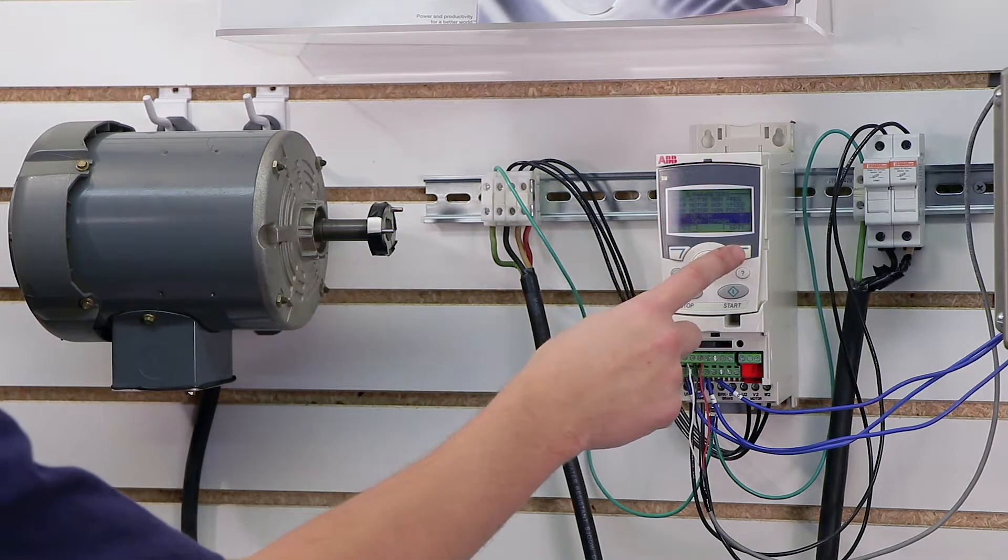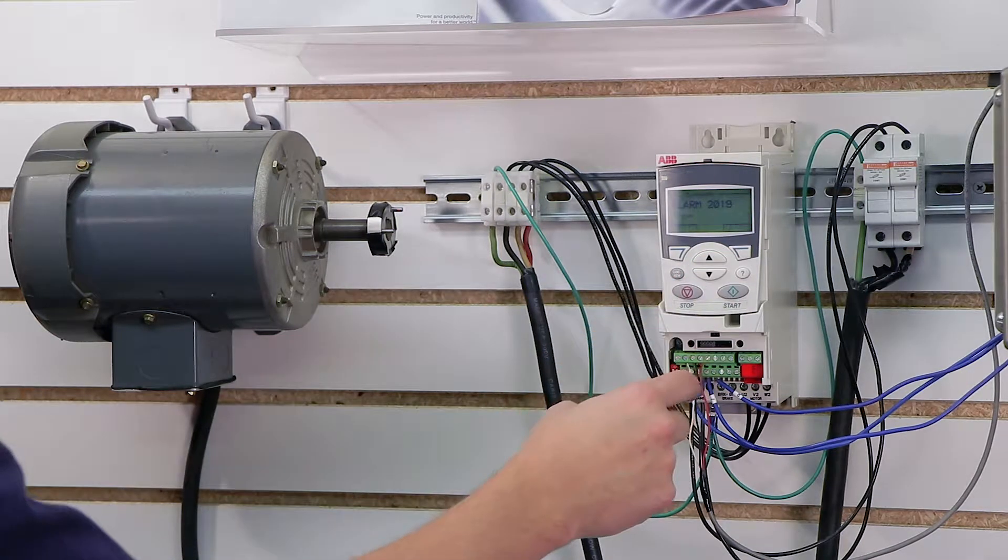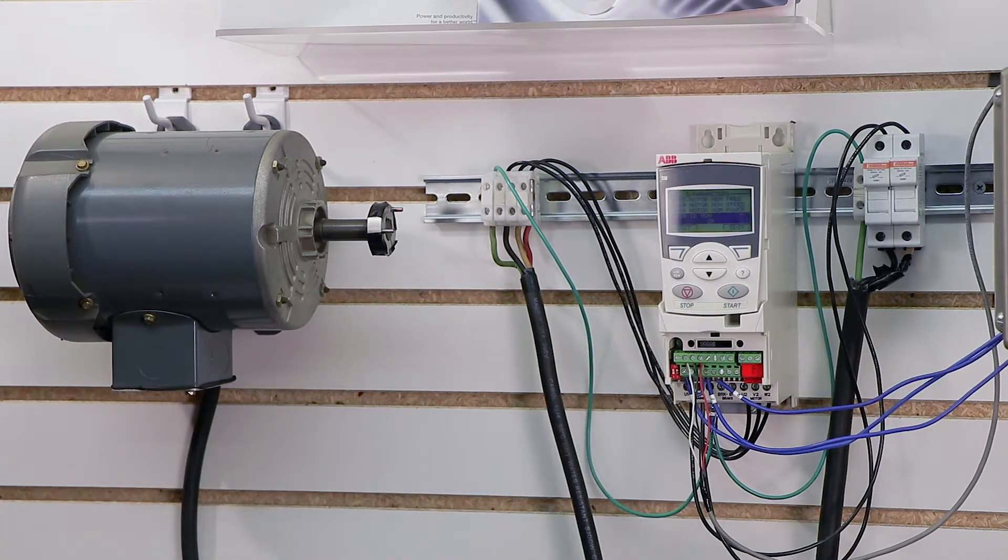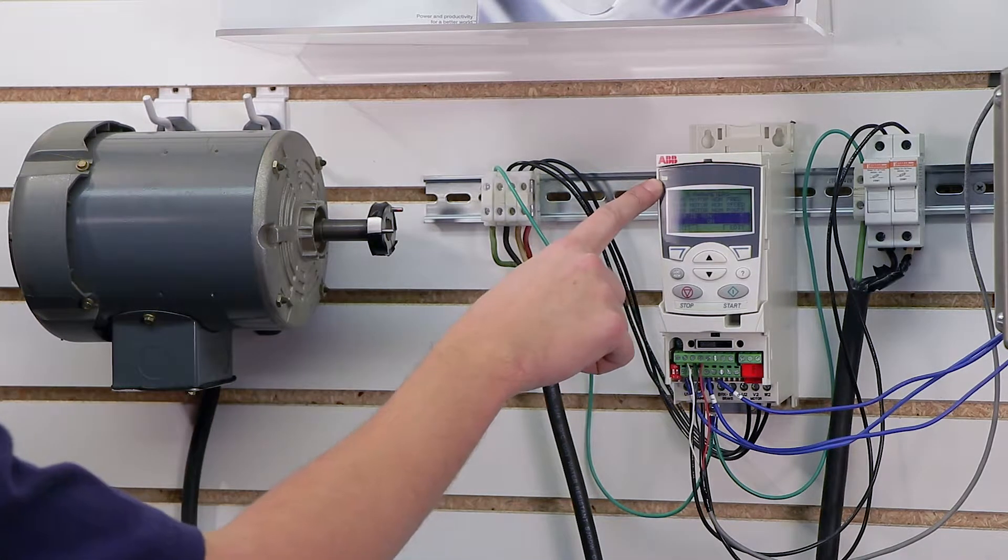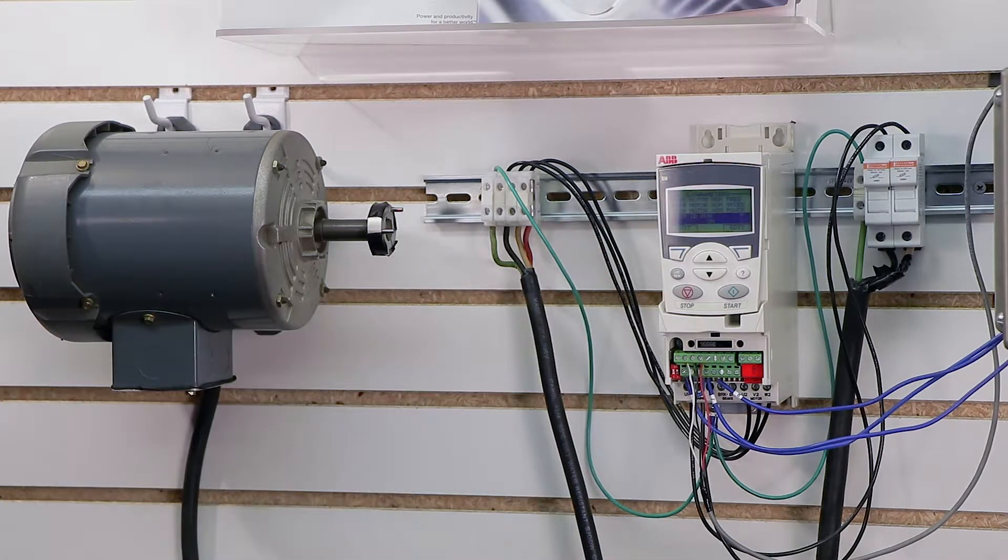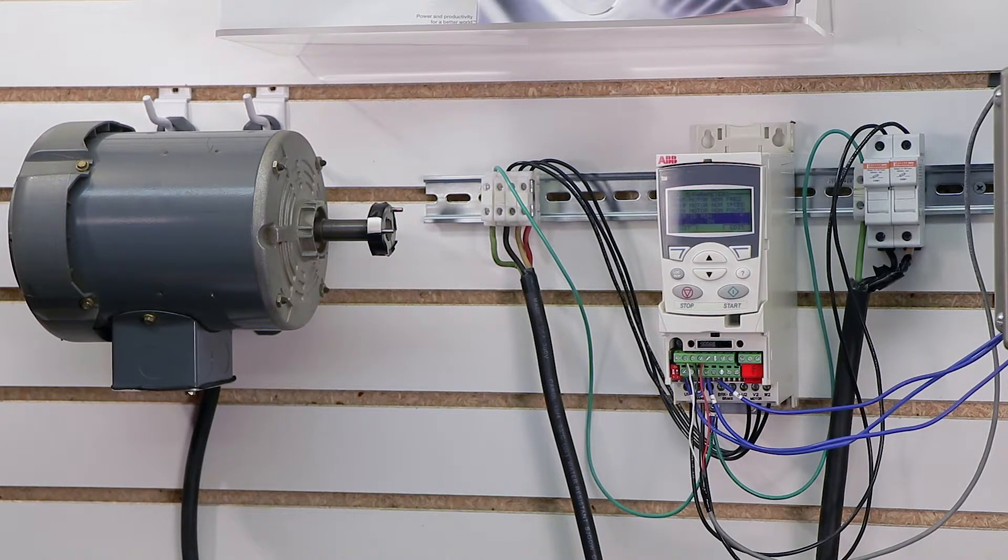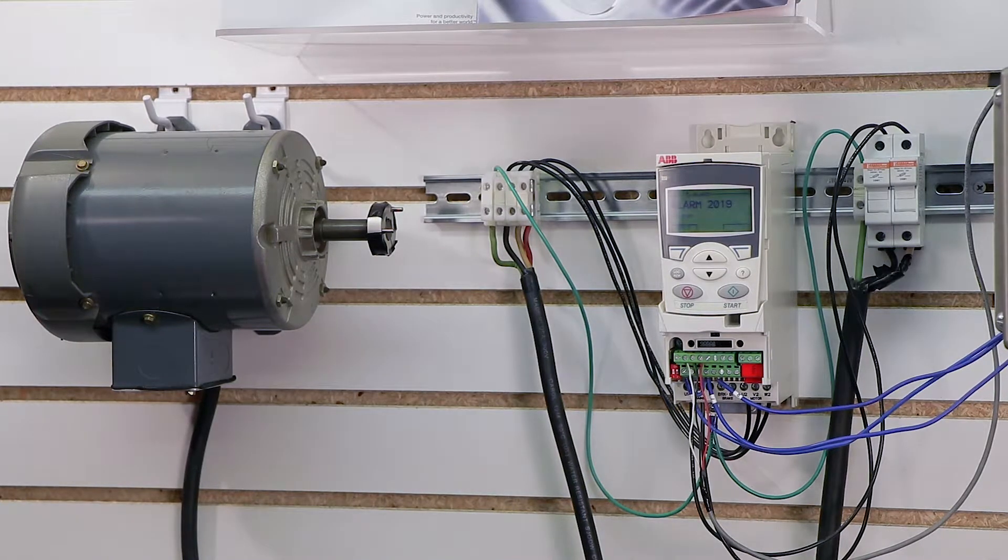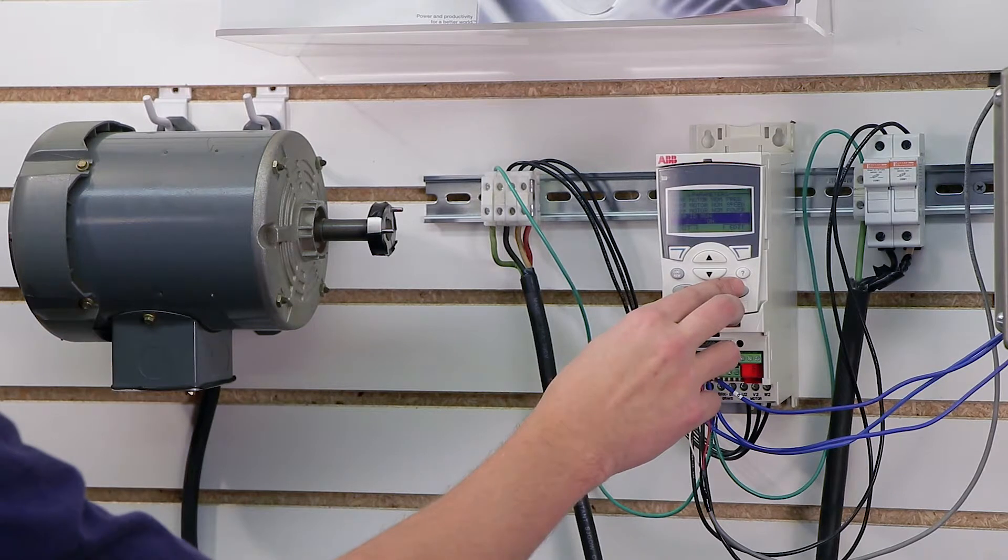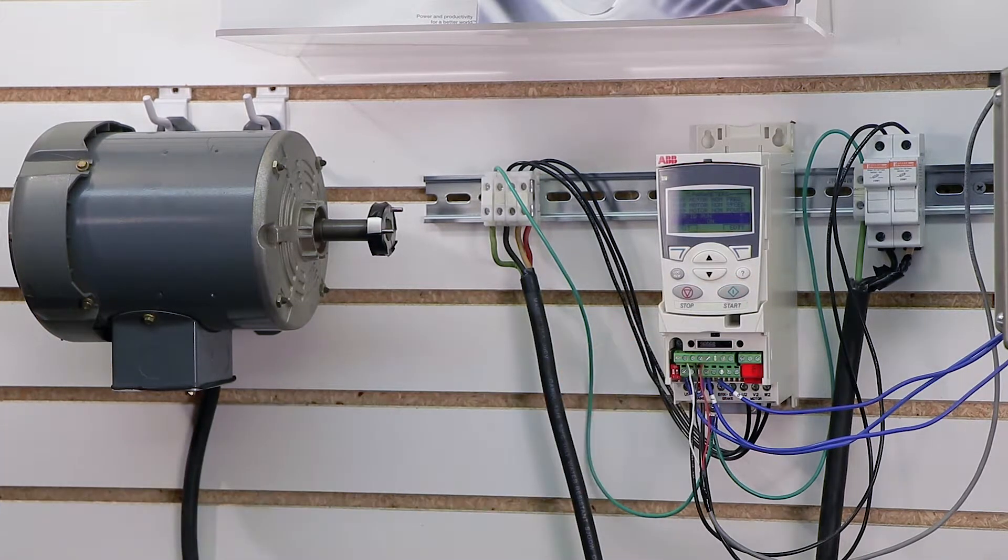And then if I go down to ID run, I can turn it on, and this will basically initialize the motor ID run or the tuning process. Notice that the light up here begins to flash, and it keeps flashing on the screen. Alarm 219 ID run, which is essentially informing you that the motor's about to initialize the ID run on the drive. The ID run is really good because it essentially allows you to tune the drive to the motor. And so there it goes - I went ahead and pressed the start command.